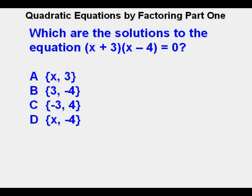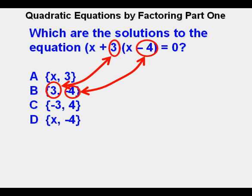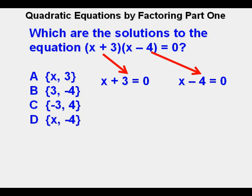Let's look at one last problem, a multiple choice question about finding solutions by factoring. Which are the solutions to the quadratic equation quantity x plus 3 times quantity x minus 4 equals 0? When you see a problem like this, the test writer is setting you up. You see the 3 here matching the 3 in the answer and the negative 4 matching the negative 4. The test writer is hoping you'll bite on this one, but it's not the right answer. Remember the danger, danger, danger counterintuitive? To solve, you will need to write two separate equations, one for each binomial. One equation is x plus 3 equals 0 and the other equation is x minus 4 equals 0.